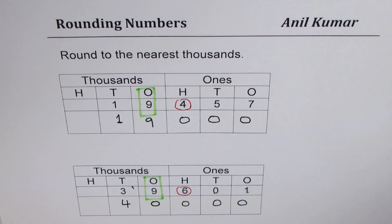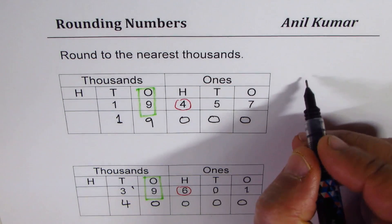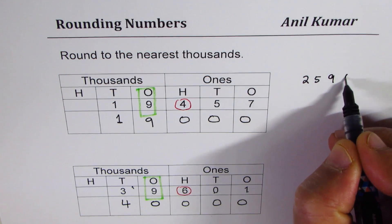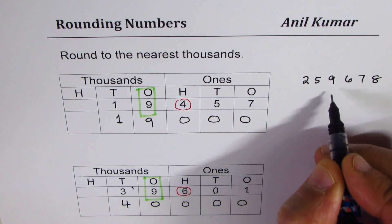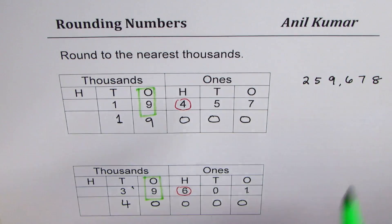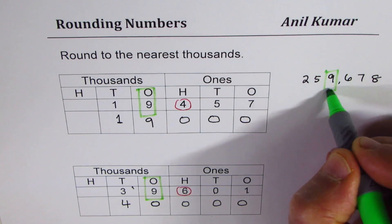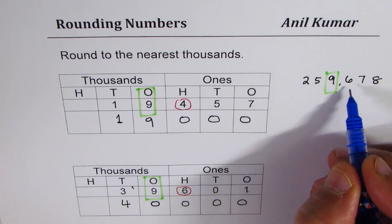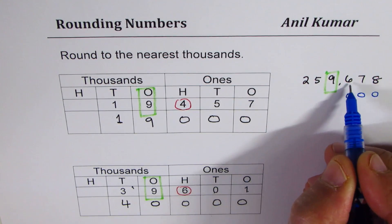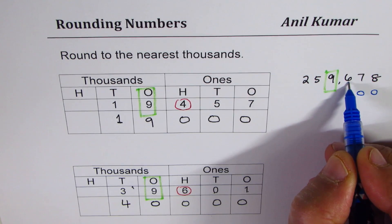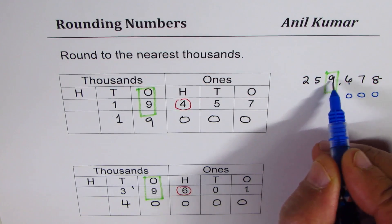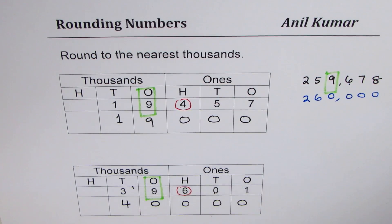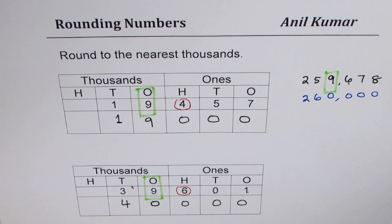Let's take another example: the number is 259,678. In the thousands place we have nine. The numbers to the right become zero. Since we have six here — five or more — it rounds higher: 59 becomes 60, so we get 260,000.